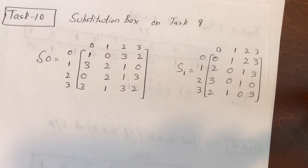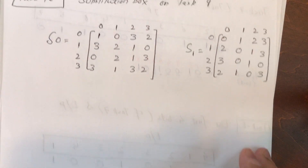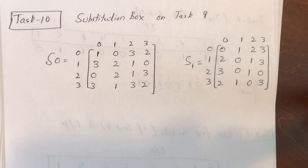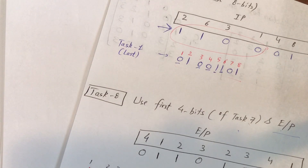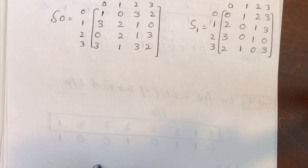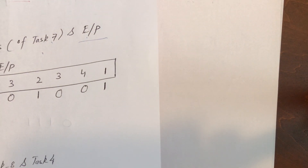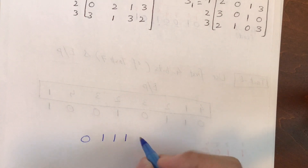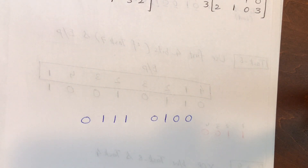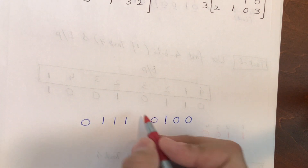Task 10 is the hardest task — we need to go back and forth converting binary to decimal and back. My Task 9 output is: 0 1 1 1 0 1 1 1 0 1 0 0 1 0 0. Divide this output into two parts: the left part will be used with Substitution Box S0, and the right part with Substitution Box S1.